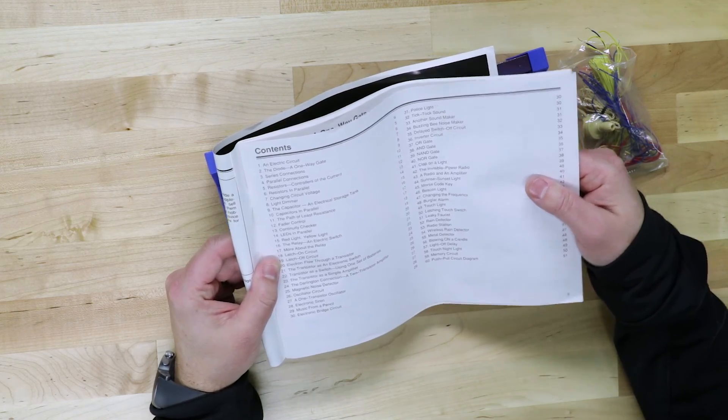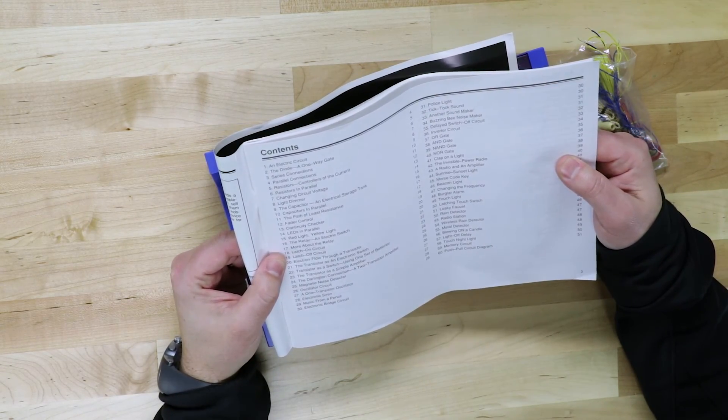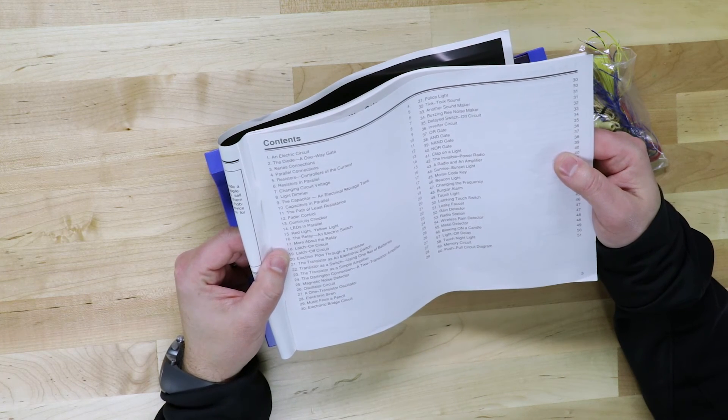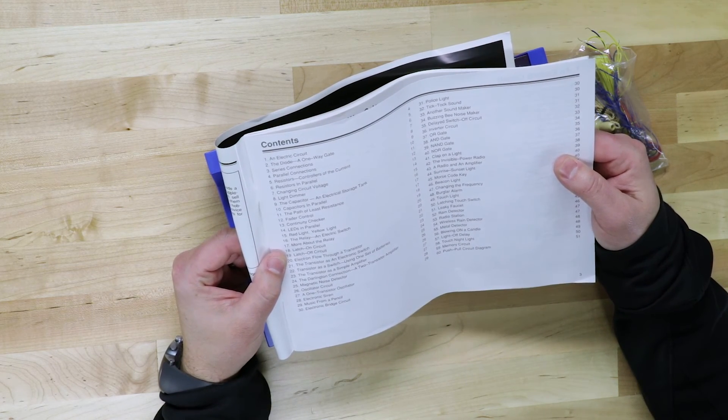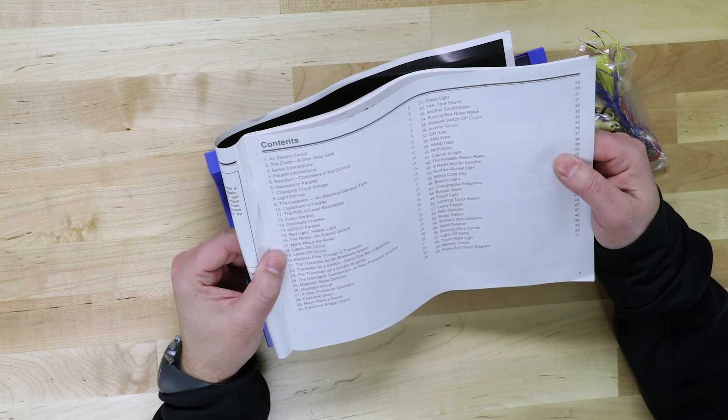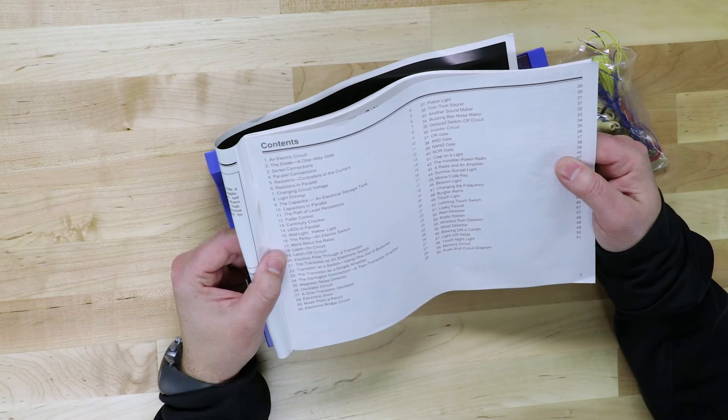which probably needs a pencil. I don't have one here. Clap on a light, so like the old clapper, a rain detector, a radio station, a wireless rain detector, a metal detector,